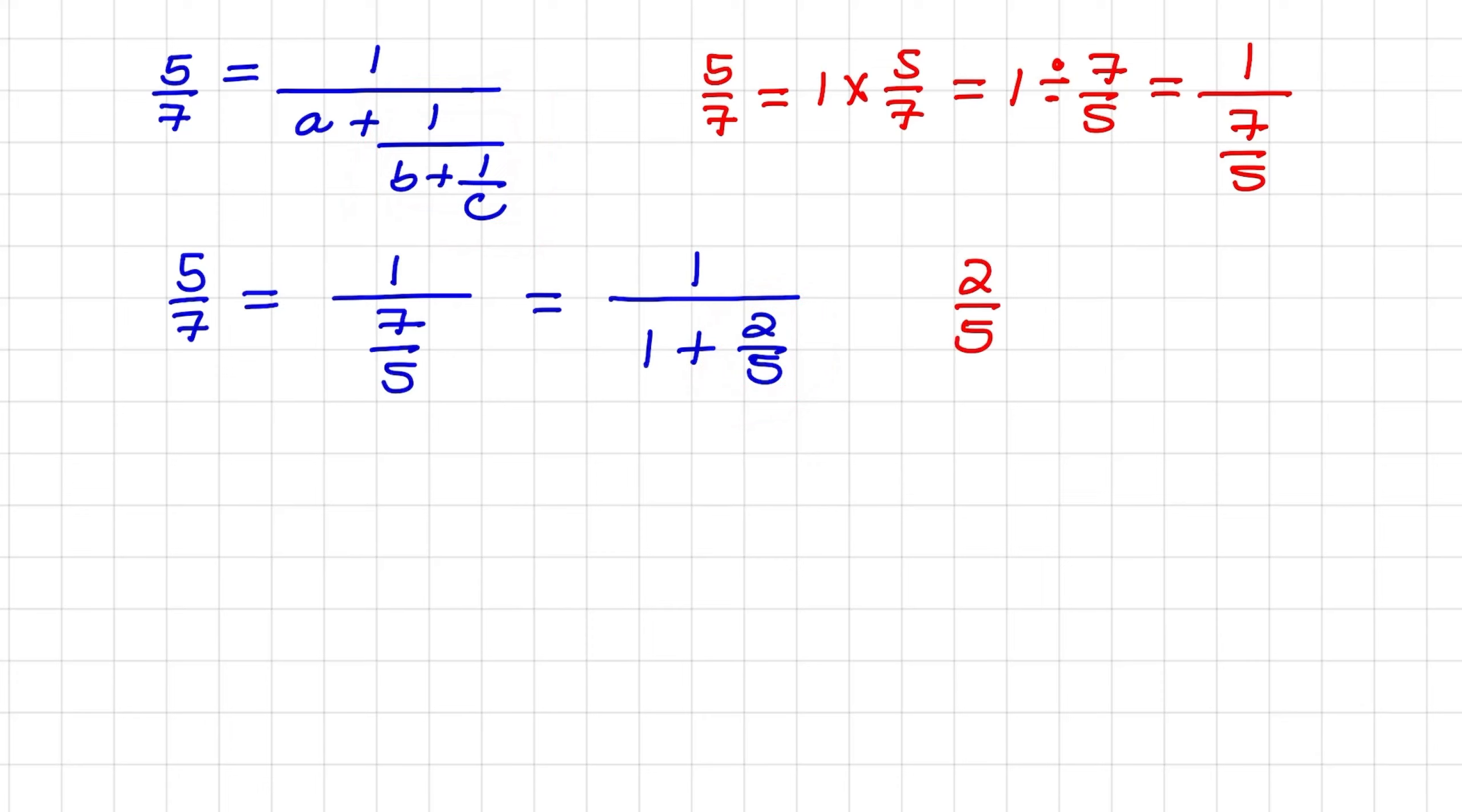And again, I can rewrite 2 over 5 to be equal to 1 over 5 over 2, and I follow the same principle as we did before with 5 over 7.